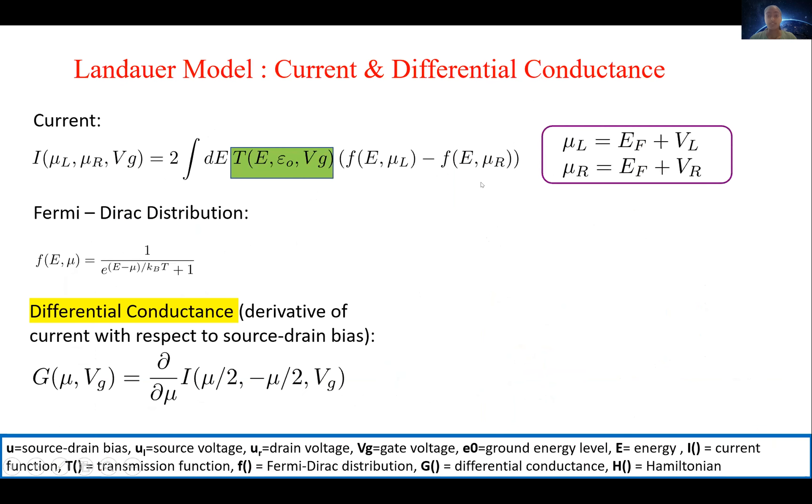And then the Landauer model equation for current, which we used to investigate experimental systems, comprise not only of this transmission function, but also of the Fermi-Dirac distribution in source and drain electrodes, which is the equilibrium energy distribution of electrons within the metal.